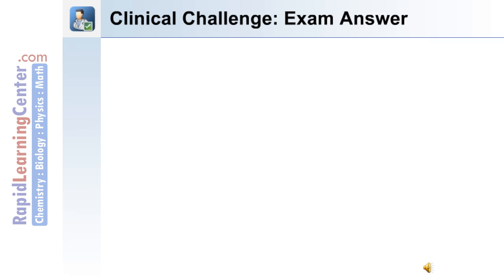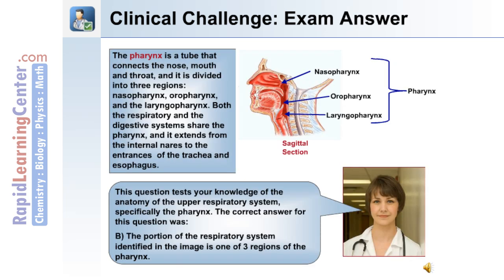Here's the answer to the question. This question tests your knowledge of the anatomy of the upper respiratory system, specifically the pharynx. The correct answer is B: the portion of the respiratory system identified in the image is one of three regions of the pharynx.